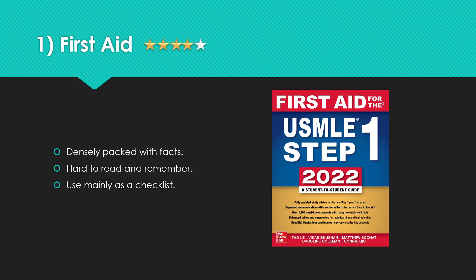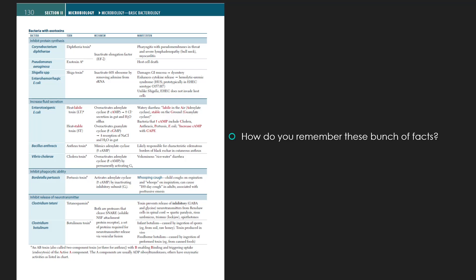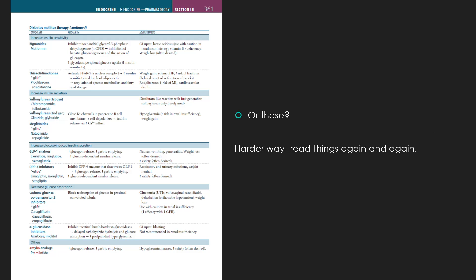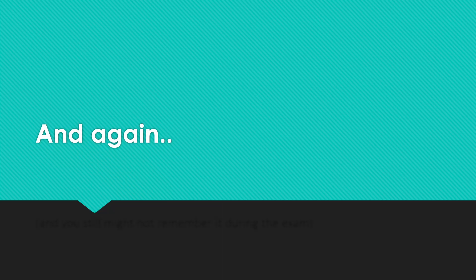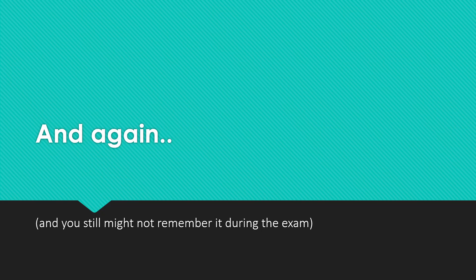Next up is First Aid. According to me, it is a 4 out of 5 star resource book which is primarily used for USMLE Step 1 exam but has most of the stuff that will be asked in the Indian PG exams as well. I give it 4 out of 5 points because it is a 700-page book that is filled with facts.